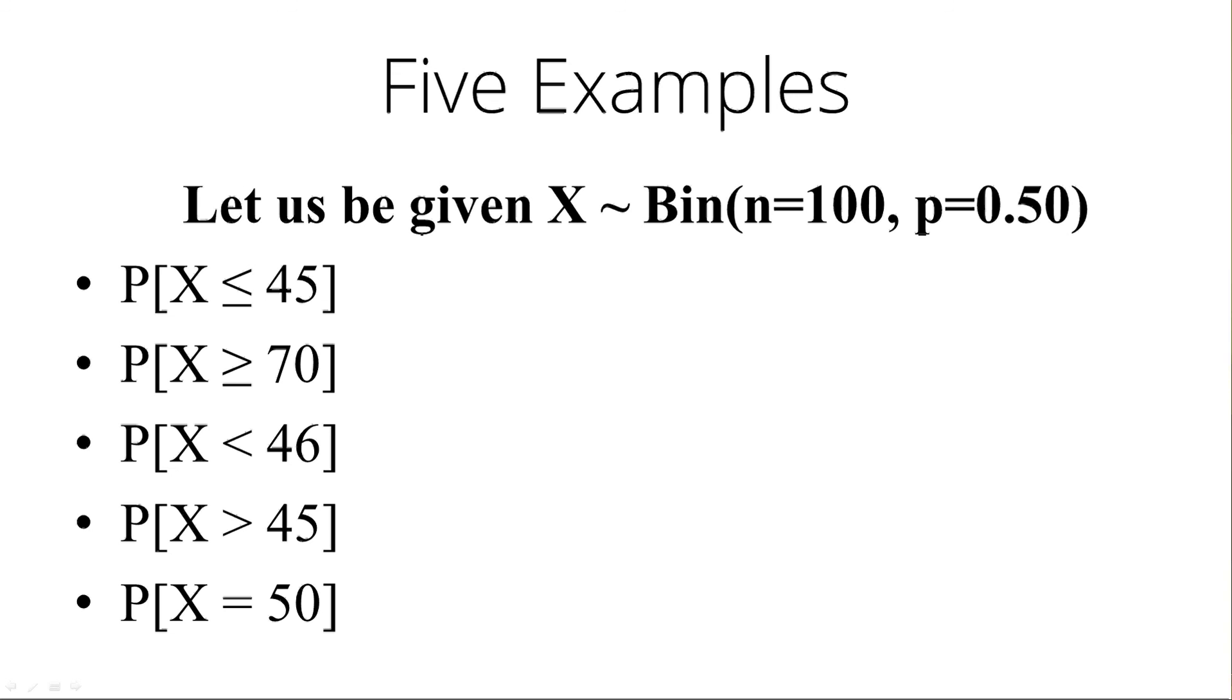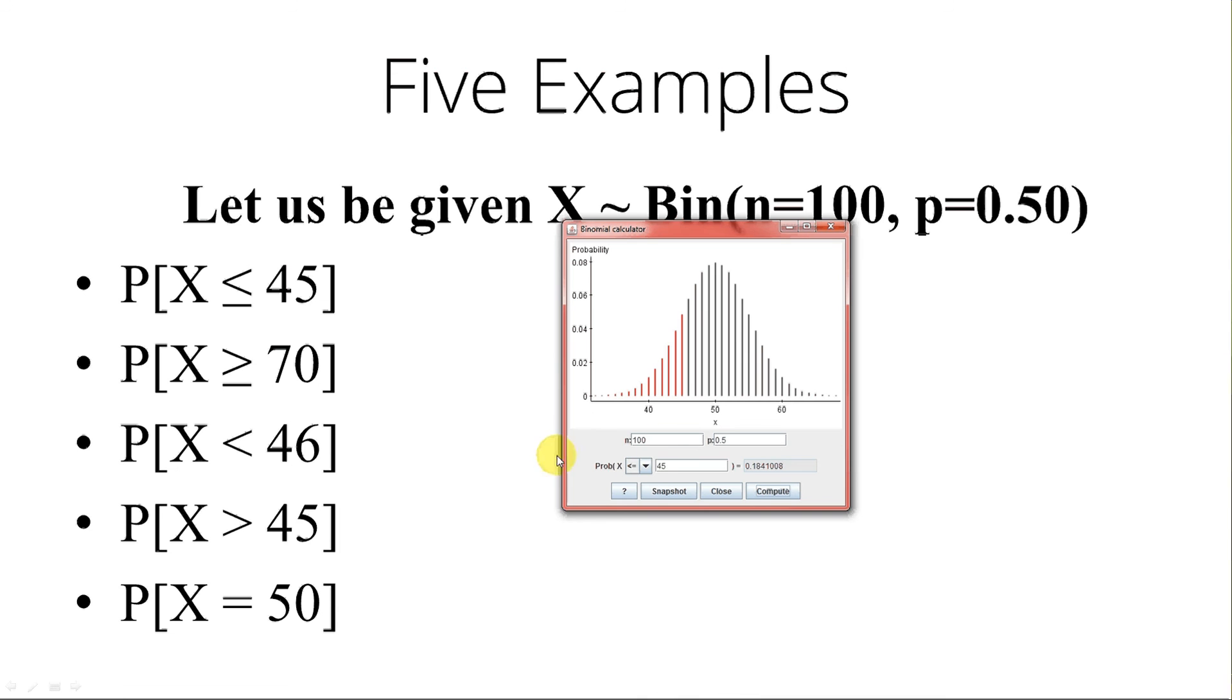Example 2. The probability that X is greater than or equal to 70. That we get 70 or more heads. That we get at least 70 heads. Again, it's still a binomial of 100 and 0.50. We care about 70. And we want greater than or equal to. Compute.